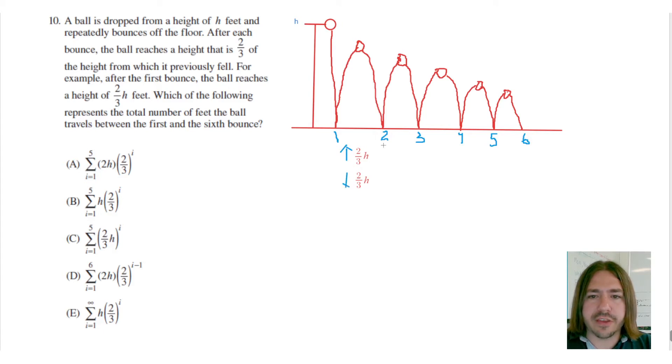Now, on the second bounce, it's two-thirds of the previous bounce, right? The height from the ground up to where the ball gets again is two-thirds of the previous bounce. So we're going to have to multiply by two-thirds again.